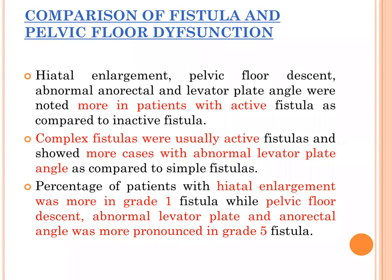Comparing fistula and pelvic floor dysfunction, hiatal enlargement, pelvic floor descent, and abnormal anorectal and levator plate angles were noted more in patients with active fistula compared to inactive fistula. Complex fistulas were usually active, so more cases showed abnormal levator plate angles compared to simple fistula. The percentage of patients with hiatal enlargement was higher in Grade 1 fistula, while pelvic floor descent, abnormal levator plate angle, and anorectal angle were more pronounced in Grade 5 fistula.